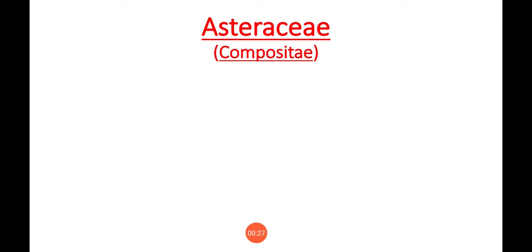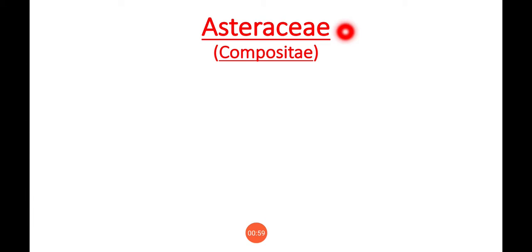Hello everyone, welcome to my channel Botnew Tutorials. In this session I would like to explain another family, that is Asteraceae. This family is also known as Compositae — this is the alternative name of the Asteraceae family. Aster is the type genus of this family, so it is named Asteraceae.